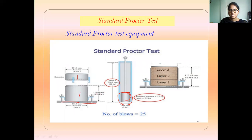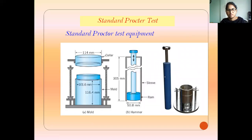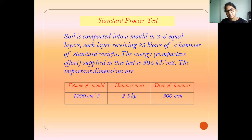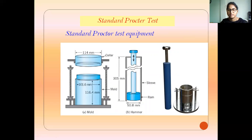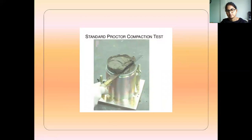The compaction is done layer by layer. First, you take the soil sample and place it with water. The mold dimensions consist of a collar and a base plate, with connections between the collar, base plate, and mold. The hammer rises and drops from a height of 300 mm. The hammer rises upward and then drops on the mold — this is the sleeve and rammer.